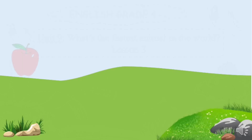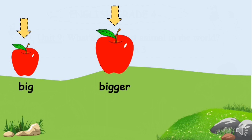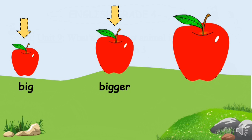Look at the picture, students. Yes, it's an apple. I have another apple. You can see the second apple is bigger than the first one, right? Wow, it's a very big apple. And we can say this is the biggest apple. Okay, so look at the three apples and repeat after me: big, bigger, biggest.